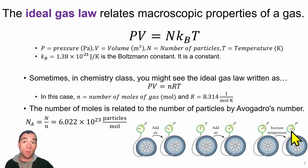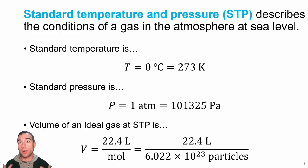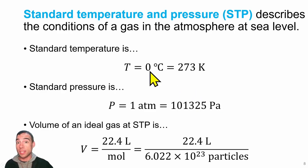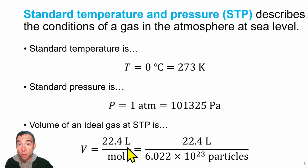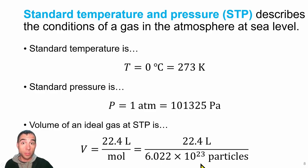The baseline temperature and pressure we live at every day is known as standard temperature and pressure (STP). Standard temperature is 0°C or 273 Kelvin. Standard pressure is one atmosphere — the pressure we feel every day — which equals 101,325 Pascals. The volume of an ideal gas at STP is 22.4 liters per mole, or equivalently 22.4 liters for every 6.022 × 10²³ particles — which is a lot of particles.